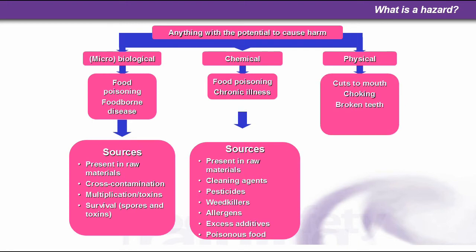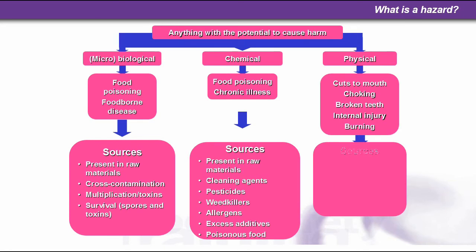The last hazard type is physical contamination — something you can actually see. It can cause cuts to the mouth, choking, broken teeth, internal injury, and burning. Sources, similar to the other two, could be present in raw materials, or foreign bodies could be introduced during production and preparation.